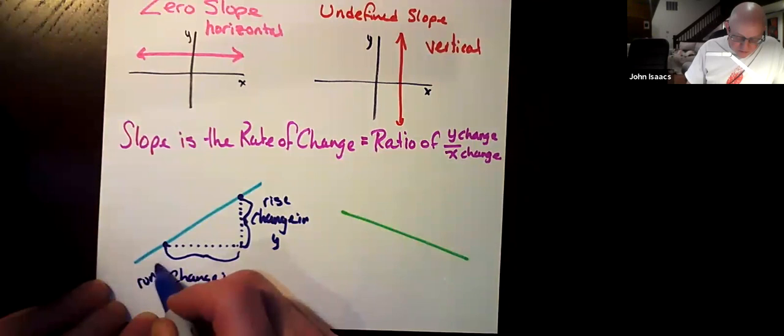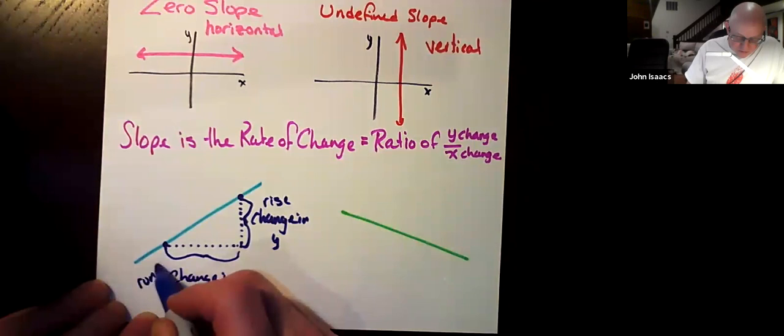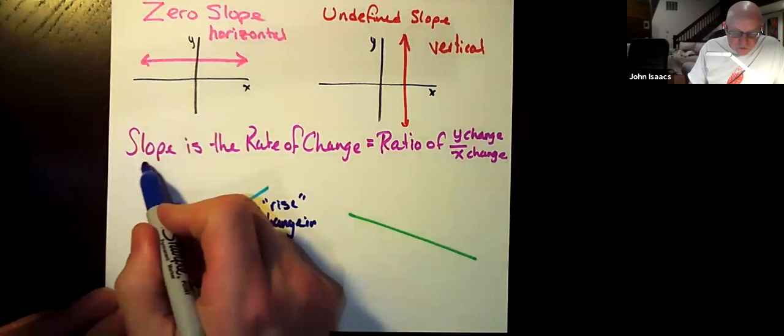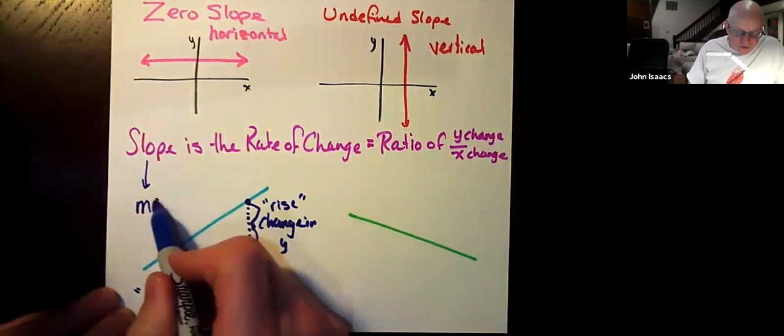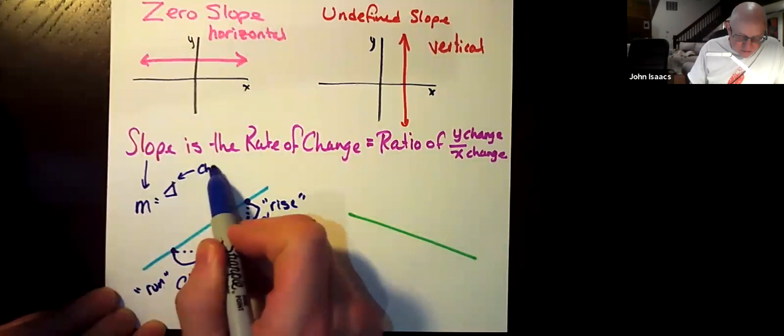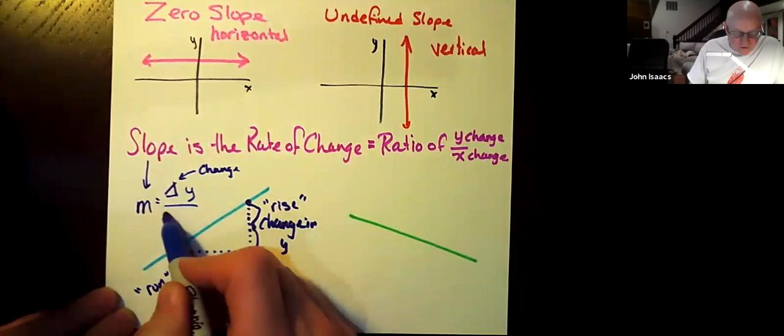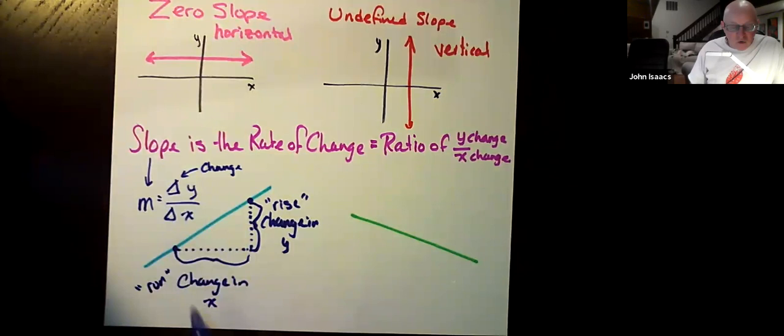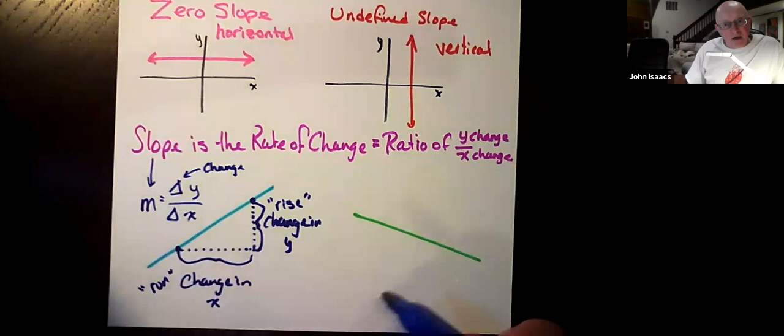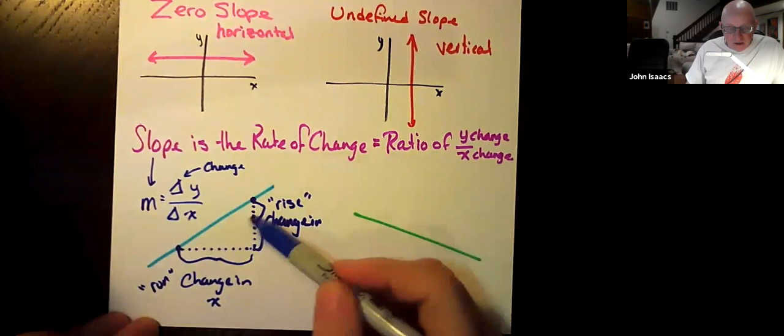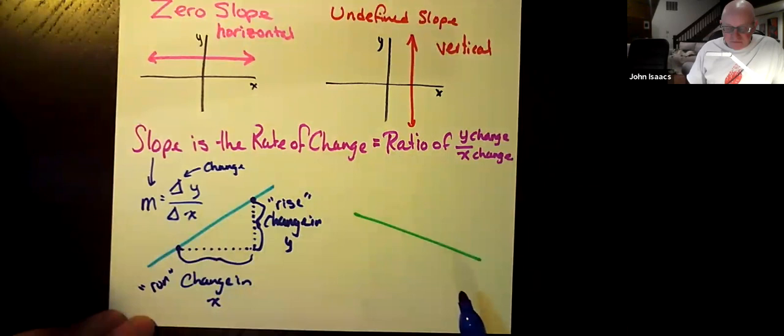And then you're going to calculate how far this is that I'm going to call the change in x. You could think of this as the rise. You could think of this as the run. And slope, which we call m, is equal to the change, delta, change in y over change in x. Delta stands for change, delta y over delta x, or rise over run. So the actual slope is a calculated number, and you can calculate it by dividing the ratio, dividing the rise, the change in y, divided by the run, the change in x.